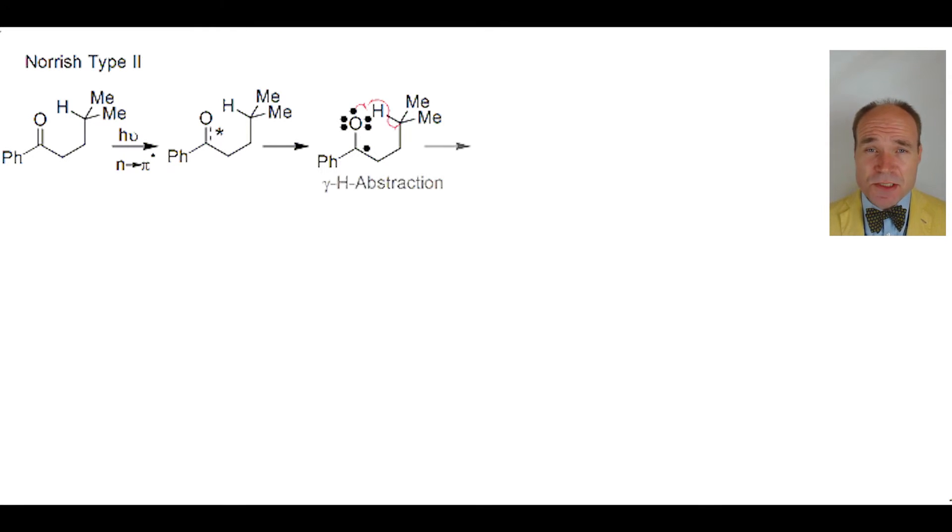The oxygen radical abstracts the hydrogen of the gamma-carbon to create a hydroxyl group and a gamma-carbon radical. Next, there are two possible paths.